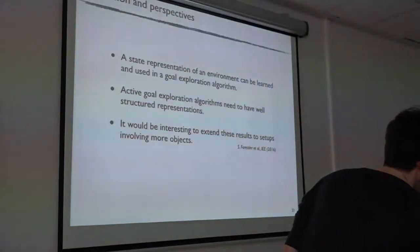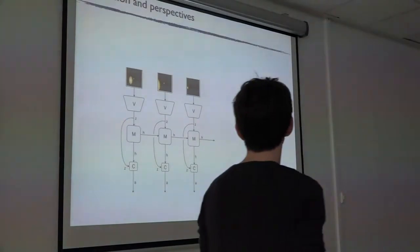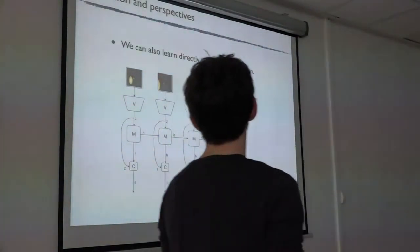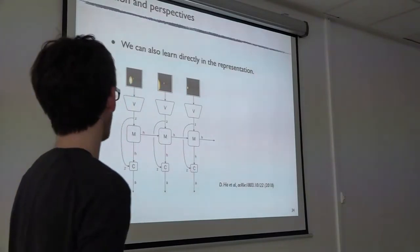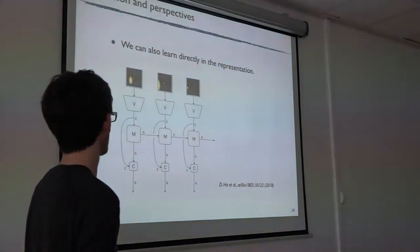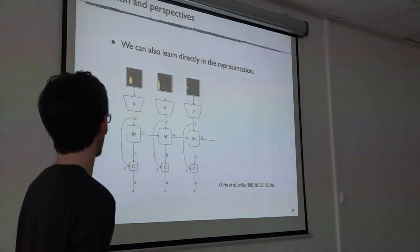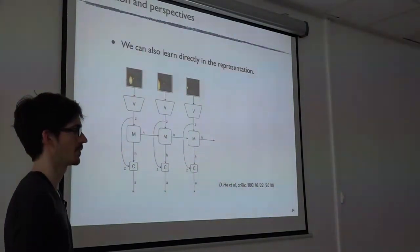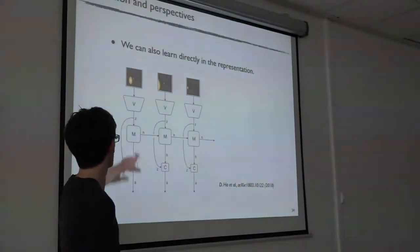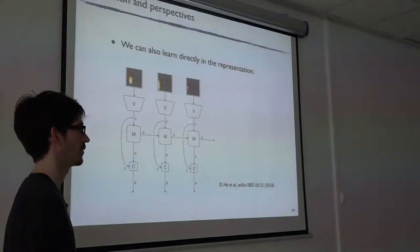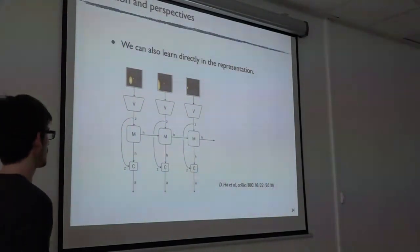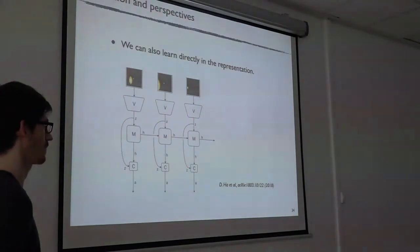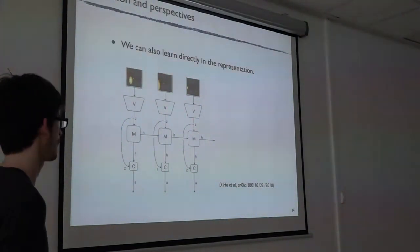In summary, a state representation of an environment can be learned and used in the goal exploration algorithm — as shown in Alexandre Perret's paper. We would also like to prove that active goal exploration benefits from a well-structured representation, and to apply this to more interesting environments involving more objects. One related direction is a recent paper posted on arXiv where they learn from raw pixels, learn the transition model with a recurrent neural network, and prove they can learn the policy for deep RL just by training in the representation with a recurrent neural network doing state transitions.